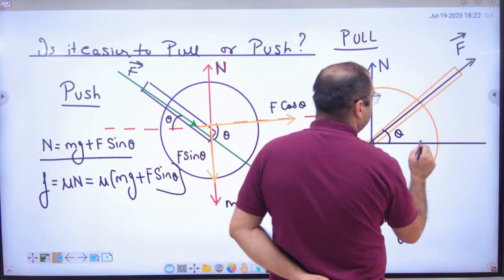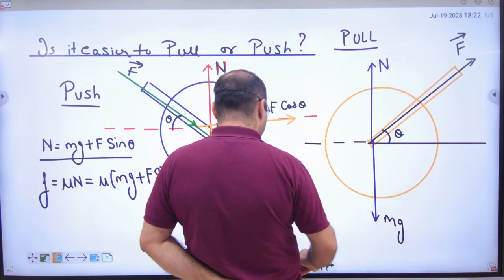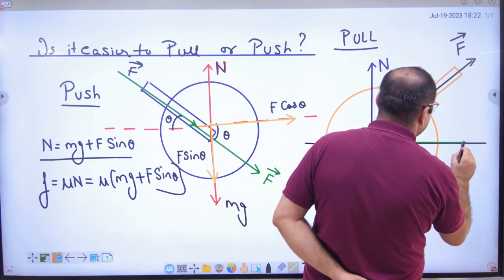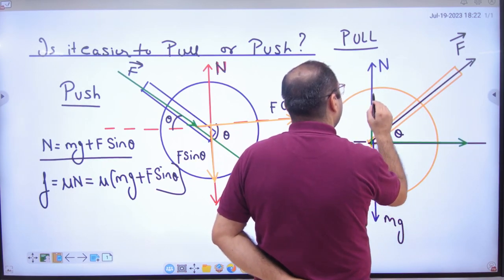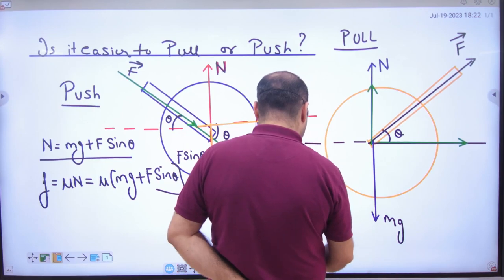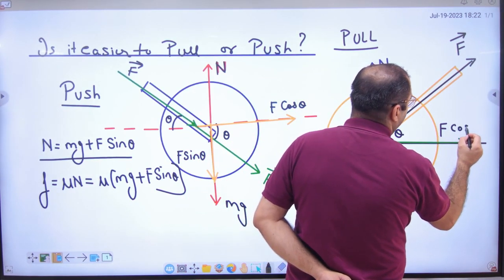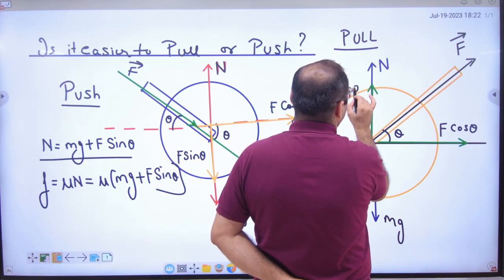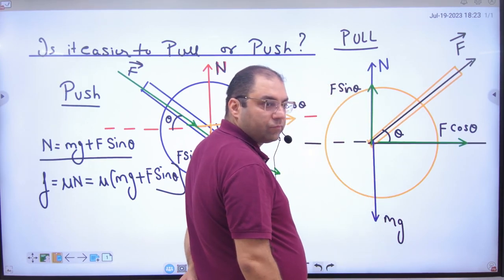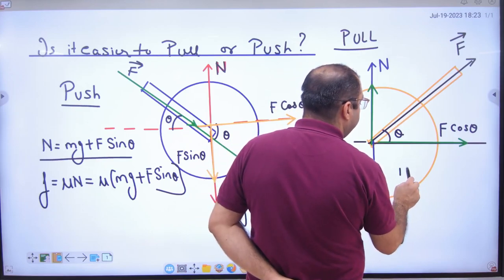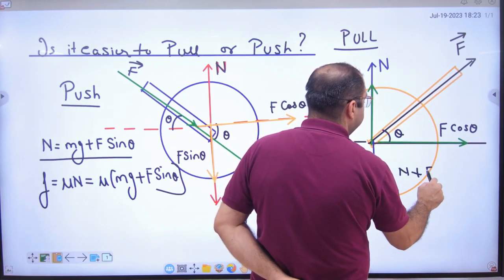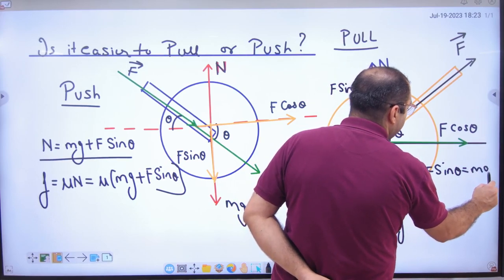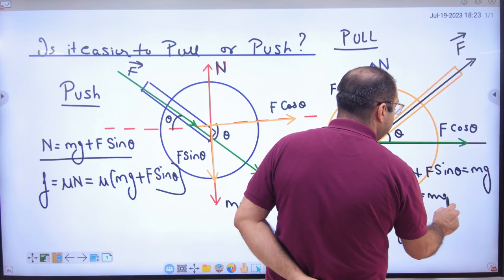Now this is f force, components two. First component f cos theta and f sin theta. So what will become f cos theta, what will become f sin theta? So what will normal reaction in this? n plus f sin theta. Upward force is equal to downward force.